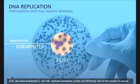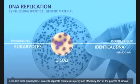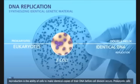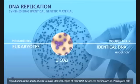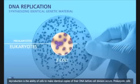Like these prokaryotic E. coli cells replicate themselves quickly and efficiently. Part of the process of asexual reproduction is the ability of cells to make identical copies of their DNA before cell division occurs.